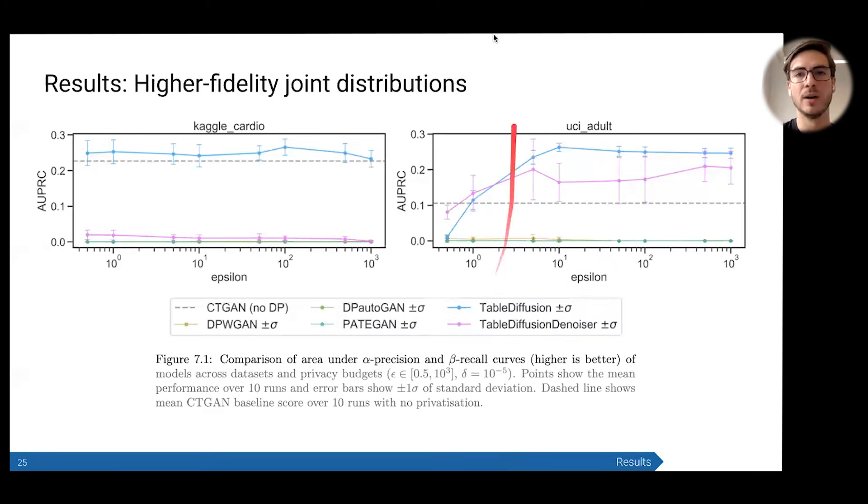Here is the first result. This shows way high fidelity joint distributions. Each part here is a different dataset. On the x-axis, we have the privacy budget. So very small budget, very high privacy, and that increases. Then we have the performance here. The goal with these area under the PR curve curves is to maximize them. Those are the alpha beta metrics we saw earlier. We can see that the table diffusion model here in blue and the denoising variant just massively outperform all the other models. They even outperform this unprivatized CTGAN benchmark that is the dotted line. They show these beautiful curves where they produce higher fidelity data as you relax your privacy budget, as we expect in our tradeoff. But you're just getting so much more at every point along that curve. This is the key result. We can also see from the error bars that particularly the noise predicting variant is much more consistent in its results.